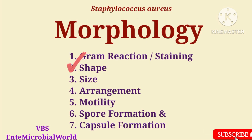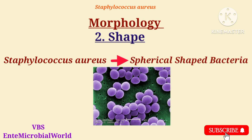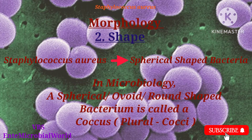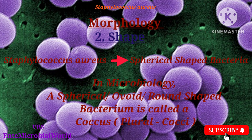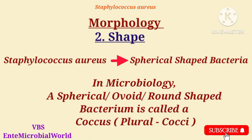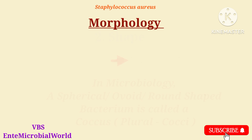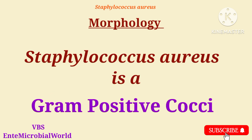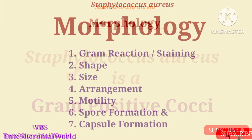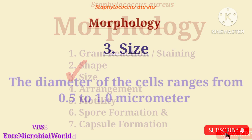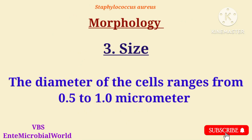Shape: Staphylococcus aureus are spherical-shaped bacteria. In microbiology, a spherical or ovoid or round-shaped bacterium is called a coccus, plural cocci. Thus, Staphylococcus aureus is a Gram-positive coccus. Size: The diameter of the cells ranges from 0.5 to 1 micrometer.